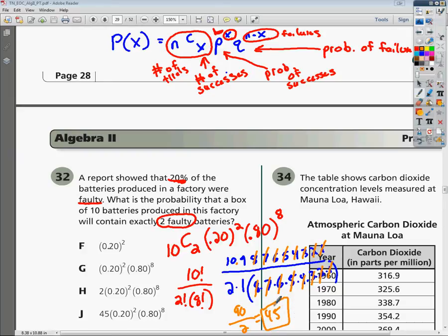So in the front of this formula, this 10 choose 2 should just become a 45. So given this information that we just figured out, you realize that F can't be correct, neither can G because you don't have your 45, H can't be correct, so your final answer for this problem is going to be J. Good luck. Do the best you can.